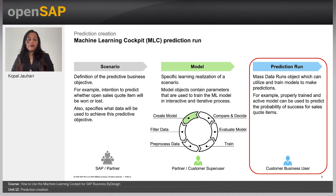For example, a trained and active model for opportunity success predictions can be used to predict the probability of success of new opportunities.